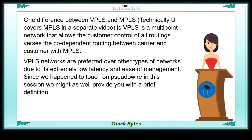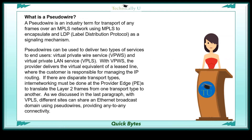Since we touched on pseudowire in this session, we might as well provide a brief definition. A pseudowire is an industry term for the transport of any frames over an MPLS network, using MPLS to encapsulate an LDP — label distribution protocol — as a signaling mechanism.